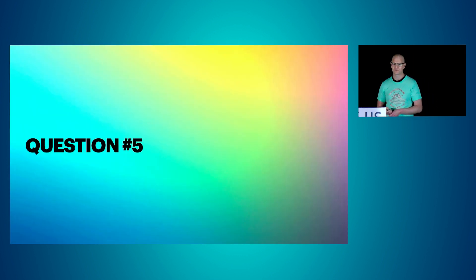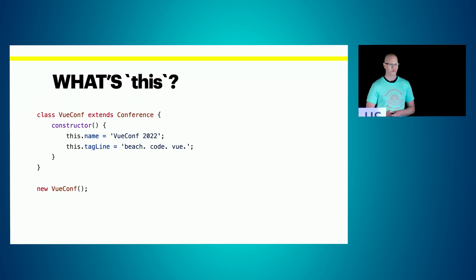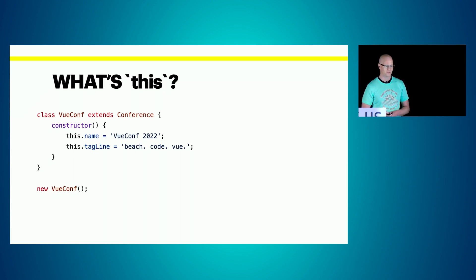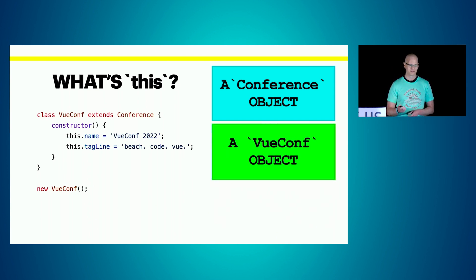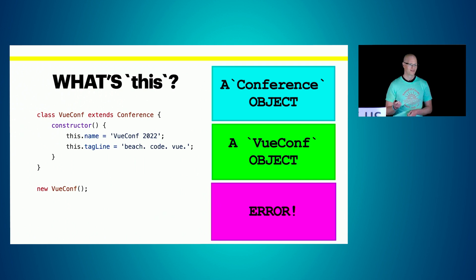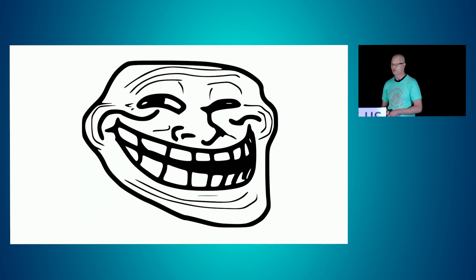Question number five, a little tricky: we have an actual class extending Conference, initializing our own constructor setting name and tagline, then instantiating with the 'new' operator. What's 'this'? Is it the Conference object, the ViewConf object, or do we get an error? We get an error — because in JavaScript, if you're extending a class and calling a constructor, you must call the super method before referencing 'this'.